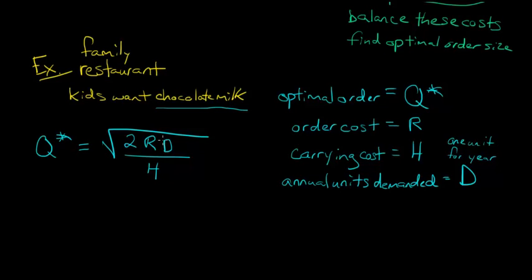We've got the square root of 2 times R, our order cost, times D, over H.